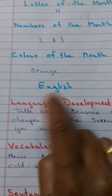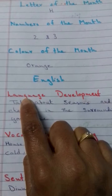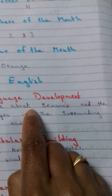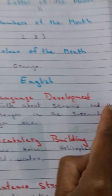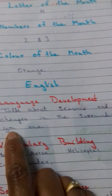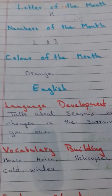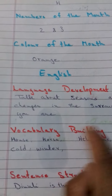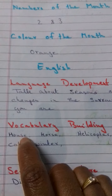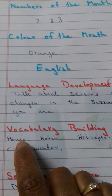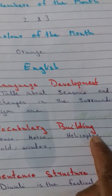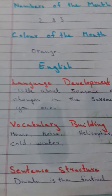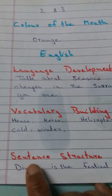In English, under language development, we are going to talk about seasons and the changes in the surrounding. In vocabulary building, it is new words like house, horse, helicopter, cold, winter, etc.